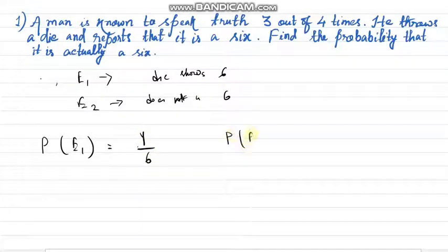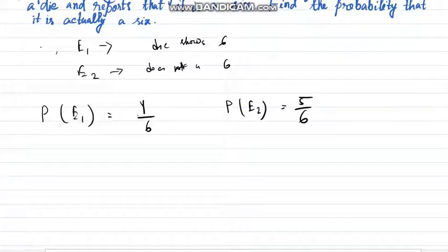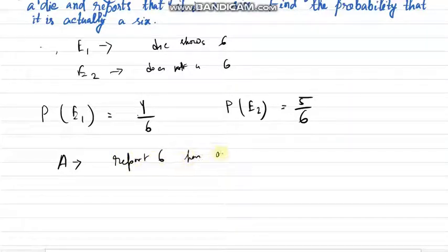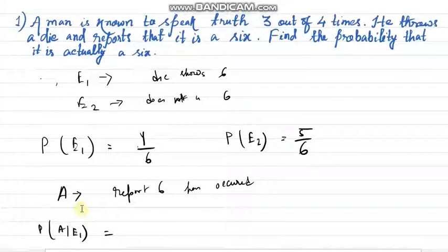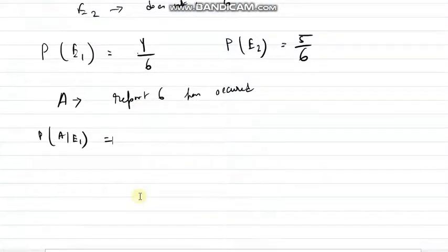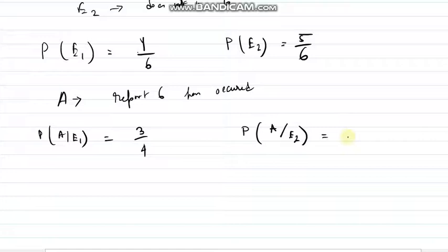The probability of E2 will obviously be 5 divided by 6 because it does not show 6. Now let event A be that the man reports that 6 has occurred. So probability of A given E1 — that he is reporting 6 and it is a 6 — means he is speaking the truth, so that probability is 3 divided by 4. Probability of A given E2 — that he reports a 6 but it does not show a 6 — means he is not speaking the truth.